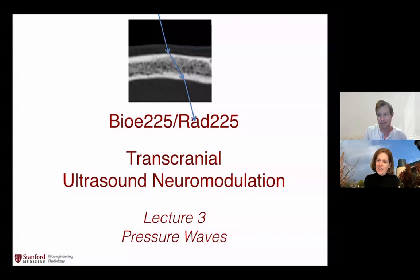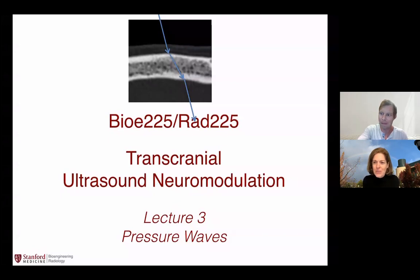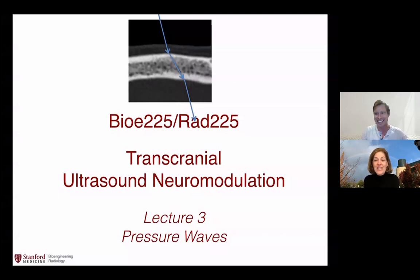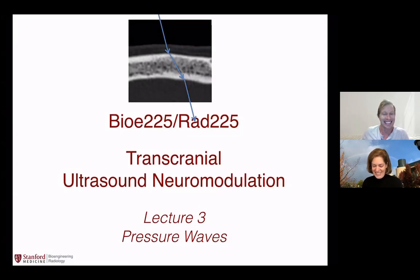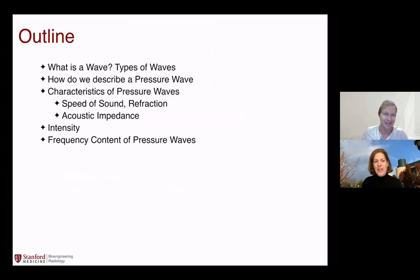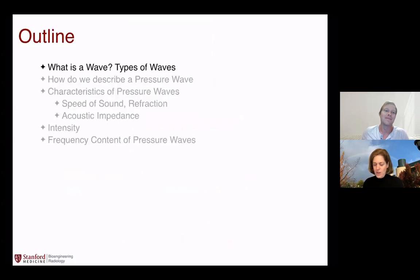We've talked a little bit about neurophysiology in our last lecture and got the idea that pressure waves are going to be able to modulate the signals in neurons, so we need to talk about pressure waves. Let's get into it. We'll cover what waves are, different types of waves, how we describe a pressure wave, characteristics of pressure waves, intensity, and frequency content.